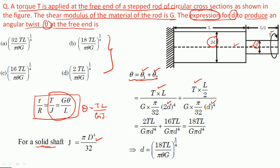We have (2D)^4 and D^4 in the respective J terms. Solving for D, the expression comes out to D = (18TL / pi*theta*G)^(1/4). Option B is the correct answer.